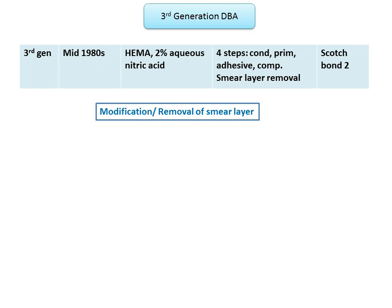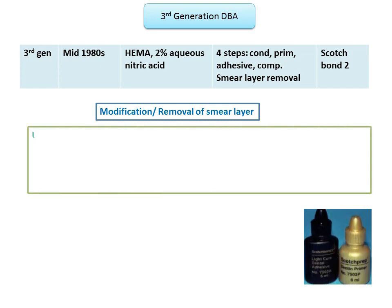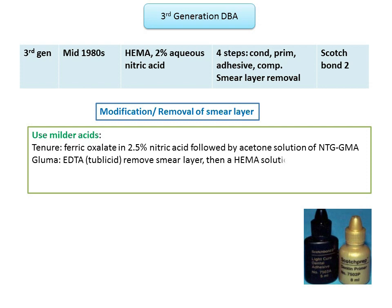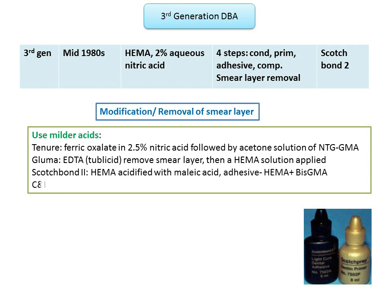Examples of third generation agents include Tenure, the oxalate system, where an acidic solution of ferric oxalate in about 2.5% nitric acid was used to alter the smear layer, then the dentine surface was treated with an acetone solution of NTG-GMA (N-tolidine glycine glycidyl methacrylate) and pyromellitic acid dimethacrylate. Gluma, where EDTA removes the smear layer followed by glutaraldehyde or HEMA solution cured with unfilled bis-GMA. Scotch Bond 2, where the primer is an aqueous solution of HEMA acidified with malic acid, and the adhesive contains HEMA and bis-GMA. And CNB Metabond, where 10% citric acid and ferric chloride remove the smear layer and HEMA acts as primer.